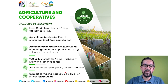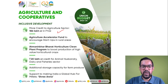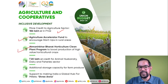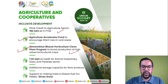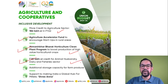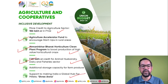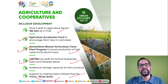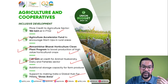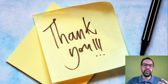On inclusive development: more credit to the agriculture sector — 20 lakh crore rupees credit target for animal husbandry and fisheries through Kisan Credit Card. Agriculture Accelerator Funds will be created for rural areas. Atmanirvana Bharat Horticulture Clean Plant Program to boost production of high-value horticulture crops. Additional storage capability for farms. To make India a global hub for millets, the Shree Anna Scheme will be launched.